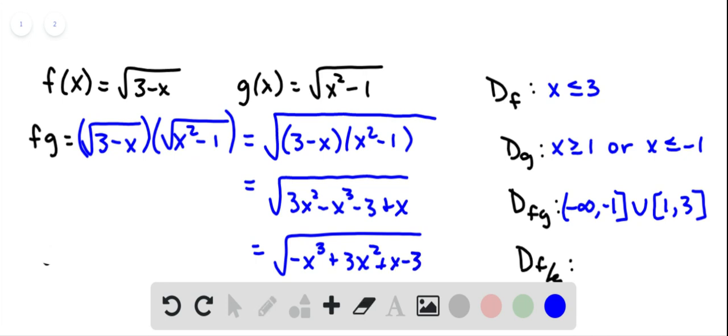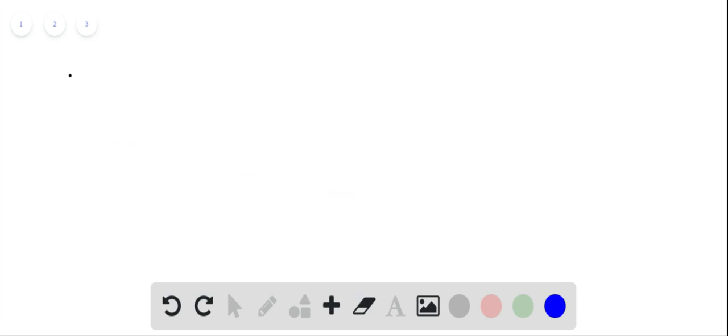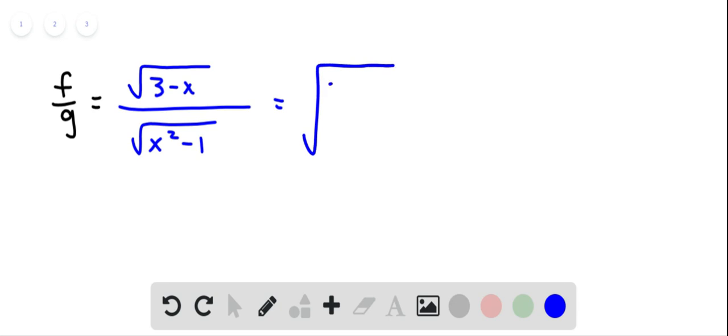Okay, let's go to another slide for f over g. So we're going to take function f, which was the square root of 3 minus x, and divide it by function g, which was the square root of x squared minus 1.